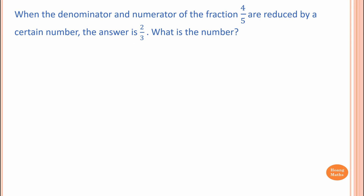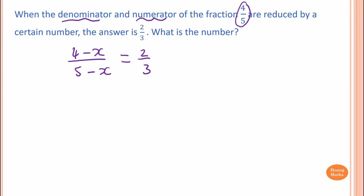Last one — please stop the video and try this one yourself. The denominator and numerator of the fraction 4/5 are reduced by a certain number. So the numerator becomes 4 minus x, and the denominator becomes 5 minus x, and the answer is 2/3. We can do this by inspection — x is 2, you can see. Otherwise, we just do cross multiply to solve this. So 3 times (4 minus x) equals 2 times (5 minus x).